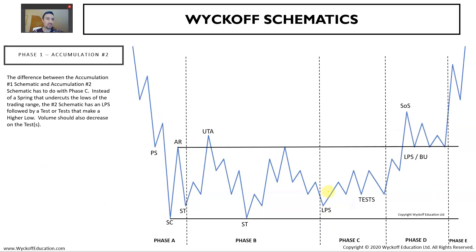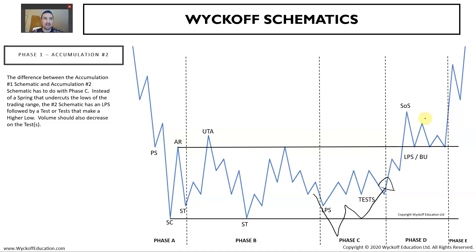Schematic number two for accumulation structures is slightly different. In phase C, rather than a spring that undercuts the low of the trading range and reverses, we have a last point of support and subsequent tests that don't undercut the low. These are final tests for the composite operator to analyze the available supply coming to market. Then again, sign of strength and backing up action follow.